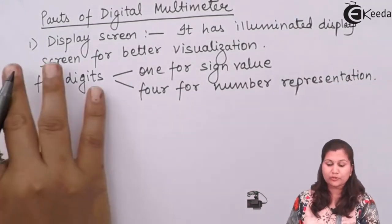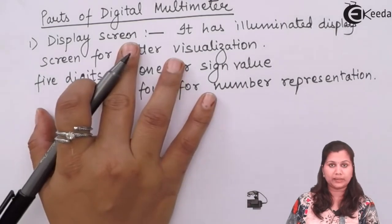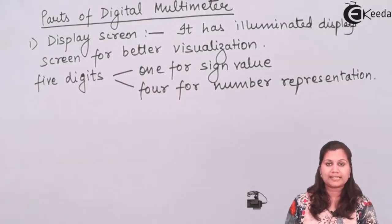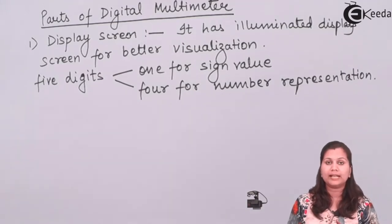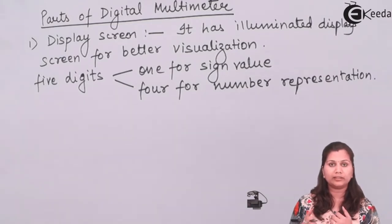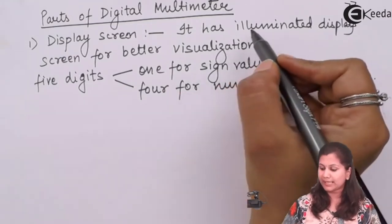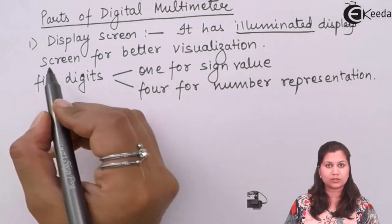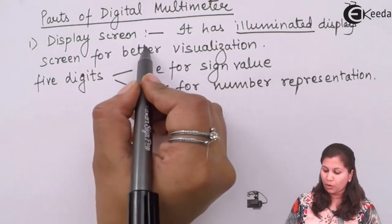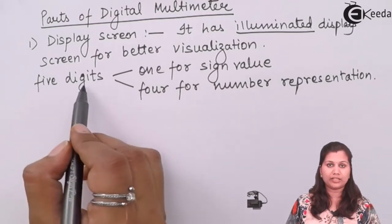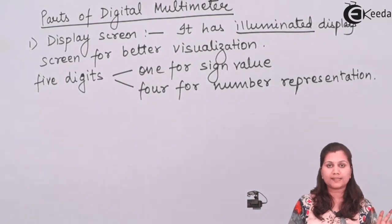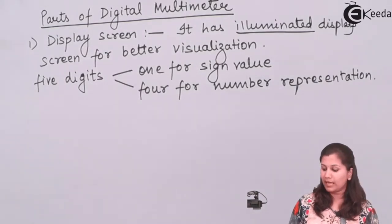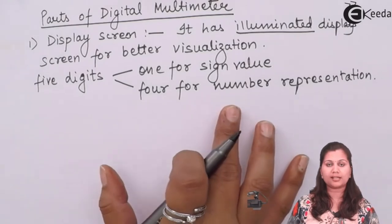The first part of the digital multimeter is the display screen. The digital multimeter has an illuminated display screen for better visualization — like if we are working in dim light, it will be easy to read the readings. It is having a five-digit display over the screen. From these five digits, one digit is for the sign — whether it is negative or positive.